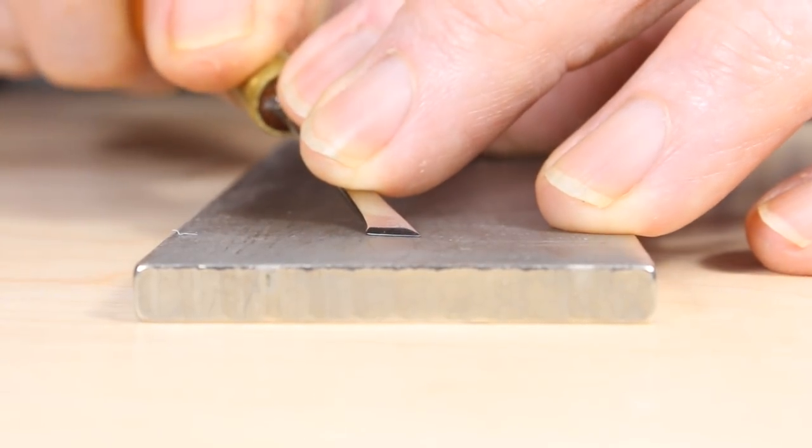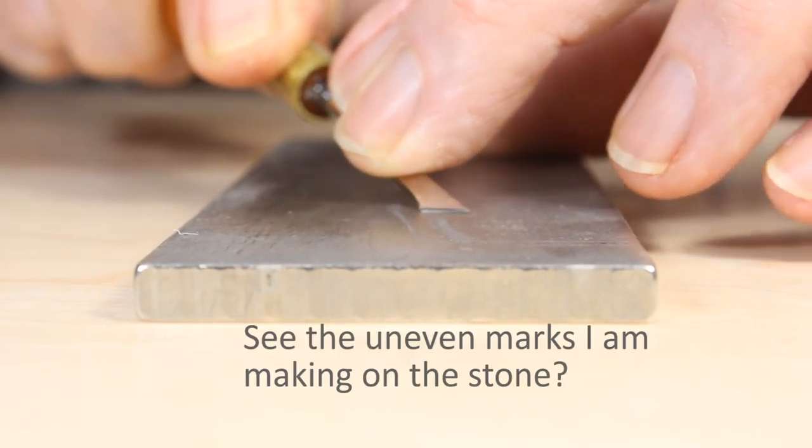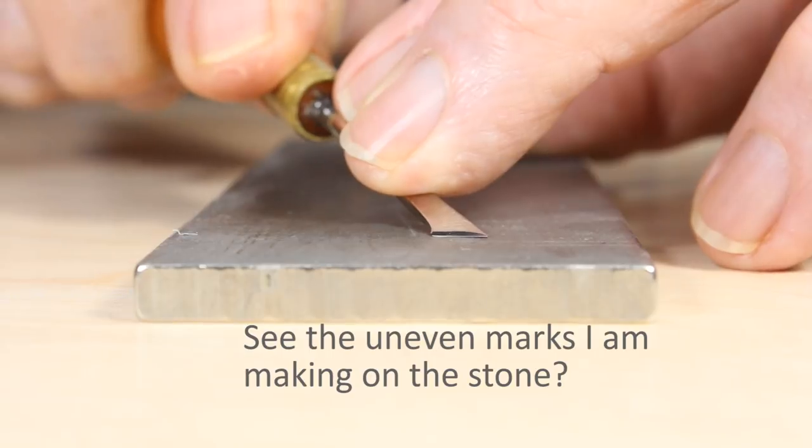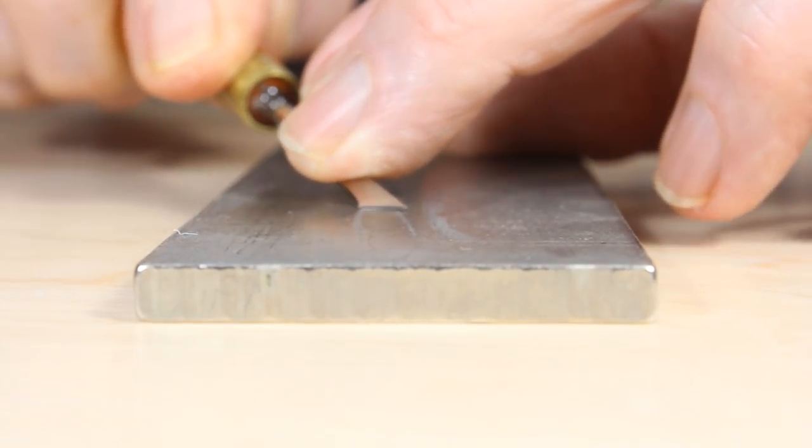Now, look at this very small blade. There's hardly any flat surface to register against the stone. It's terribly easy to rock the blade as you sharpen, creating either facets or a curved surface.